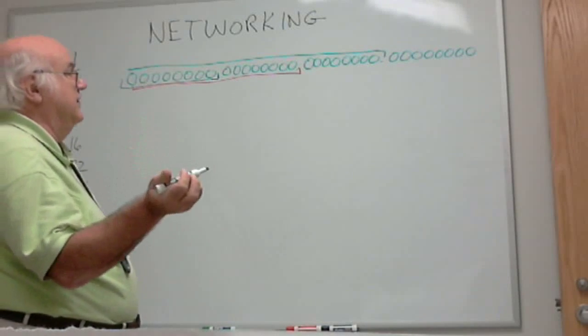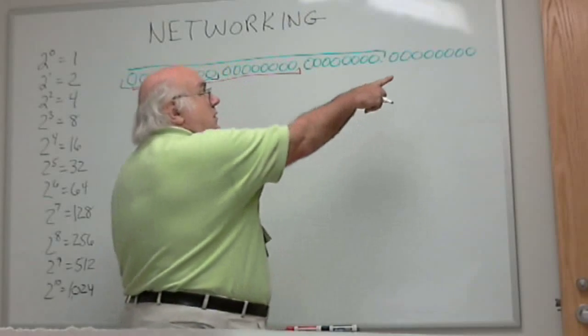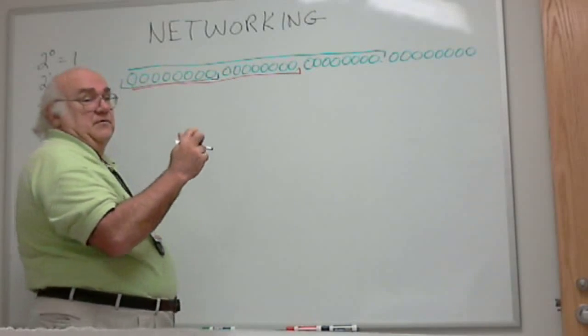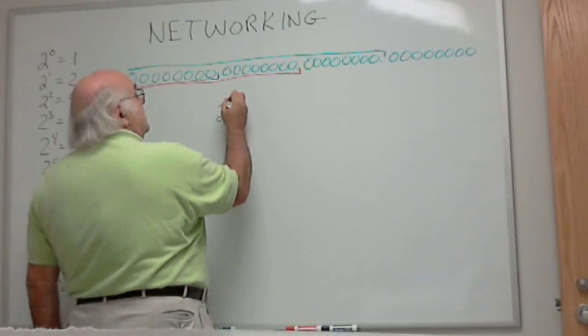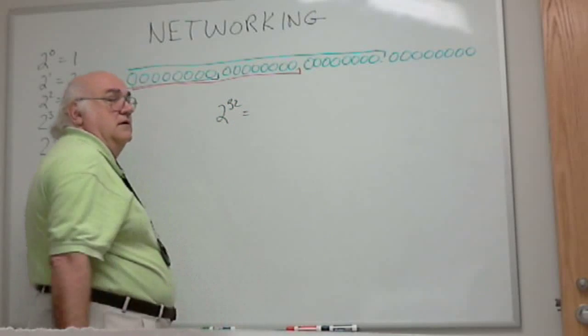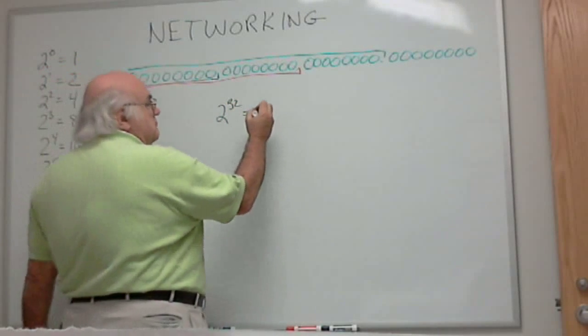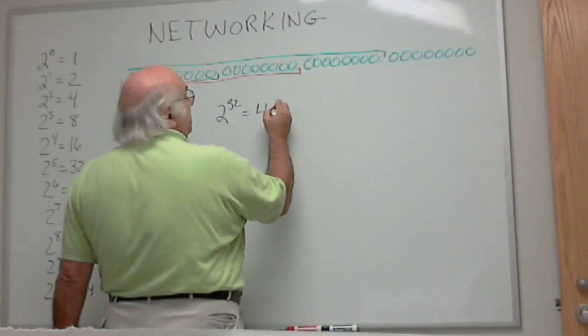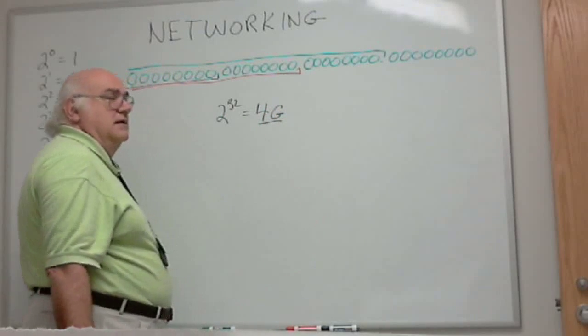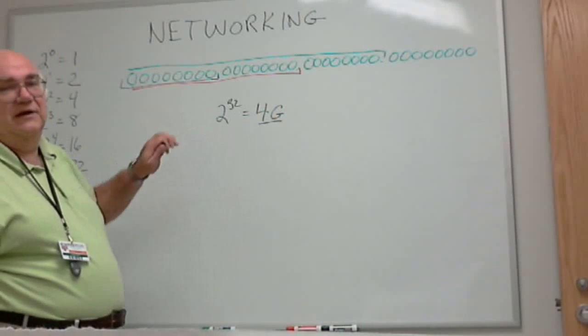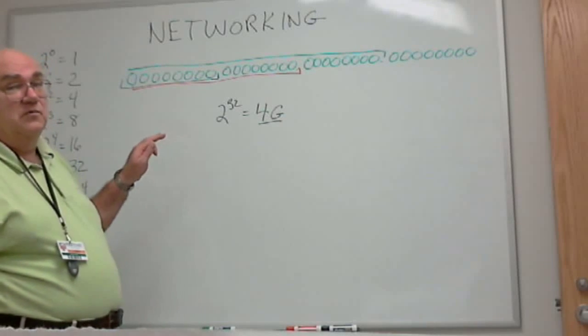If you think about it, we have 32 bits possible there, right? 2 to the 32nd power is only approximately 4 billion. 4 billion addresses. We're running out. We're running out fast.